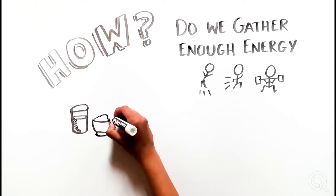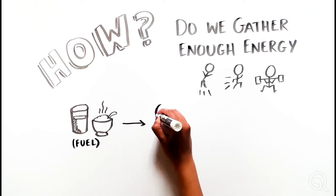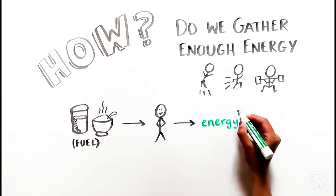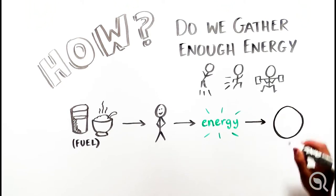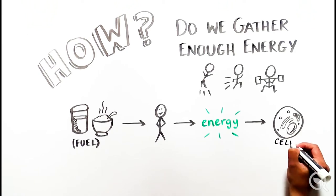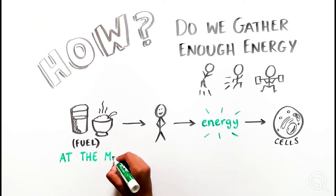These all depend on your body processing fuel to make energy. For us, this fuel takes the form of food and water. Our bodies are able to convert the food and water that we consume into compounds that our cells can use for energy. At the molecular level,